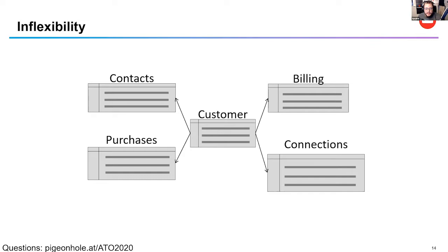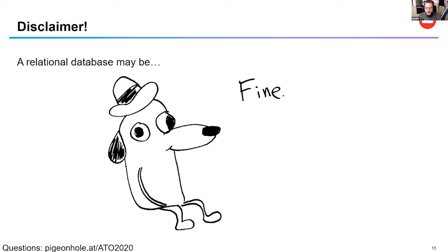I don't want you to think this is a session where I say relational is terrible and you should always use NoSQL. A relational database may be perfectly fine for your use case. If you're not experiencing those scaling, availability, performance, or flexibility problems, there's no reason to drop relational just because something else exists. But the questions I'm already seeing are: why would I want to? What use cases call for NoSQL?